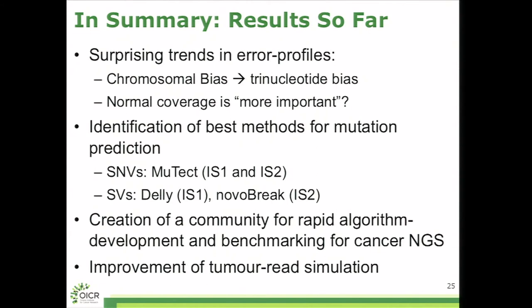In summary, we're seeing surprising trends in error profiles, both on the big side, from chromosomal bias to the very small side, trinucleotide bias. We're looking at windows of the genome and sequence contacts and things like that. It may be that normal coverage is more important than we've given it credit for, although take that with a grain of salt. We're starting to identify the best methods for mutation prediction. For example, MUTECT was the best scoring on the first two in silico datasets for SNVs, and Delia and NovoBreak respectively won the first two structural variant calls. Maybe the most important thing is we hope this is starting to foment a community that will be working on benchmarking of these algorithms and be able to carry this forward to the kind of living benchmark that I talked about.